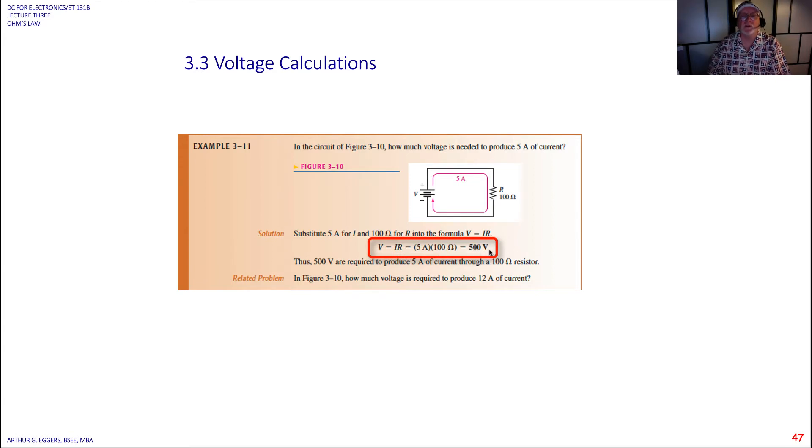I could say 10 squared here but for this small of a problem it's really not necessary. So 500 volts is what is required if I want to push 5 amps of current through a 100 ohm resistor.